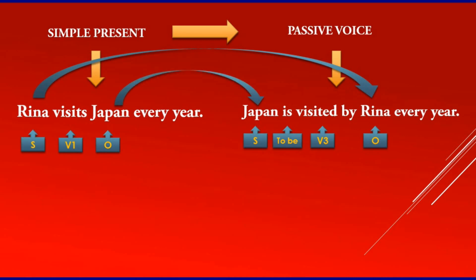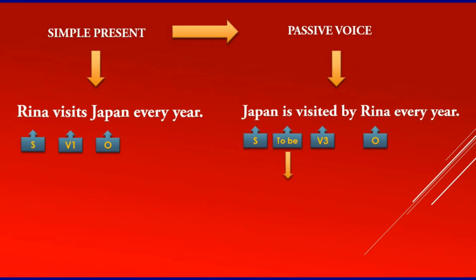First, you have to find out which one is the object, and then change it. Put the object at the beginning as the new subject. Then add to-be. In simple present, we have are, am, and is. After that, add verb 3 and the object — which is the subject from the first sentence. The object here is Japan, so put Japan at the beginning as the subject, then add to-be, then verb 3.